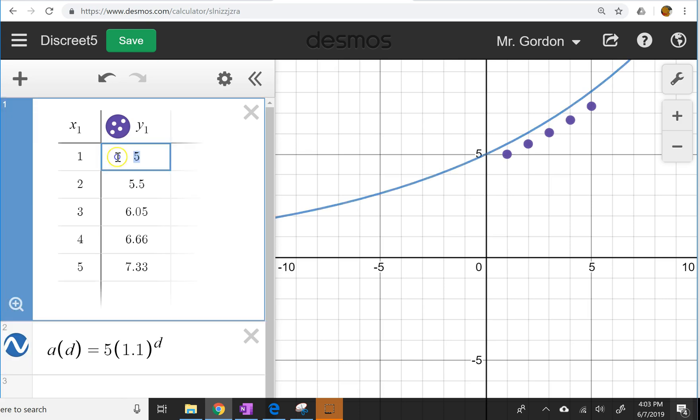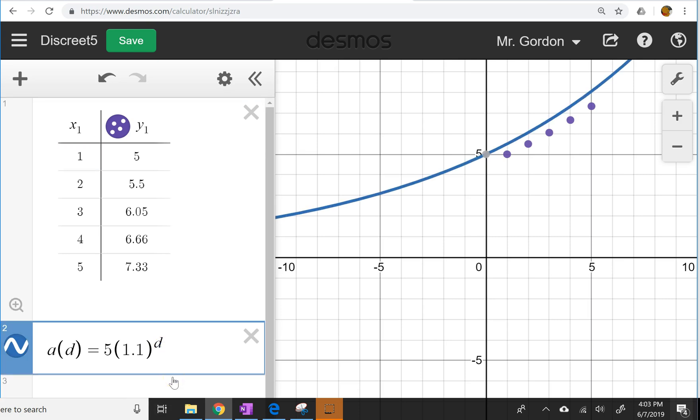So remember that when we start at the first day, at day one, we have to multiply, we have to use the d minus 1 exponent to make it fit the points from our data table, because we started with the first day, not with the zeroth day. And so now the question is, do these points in between make sense?